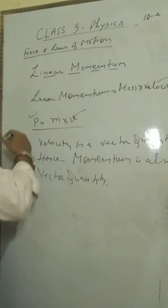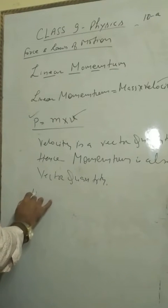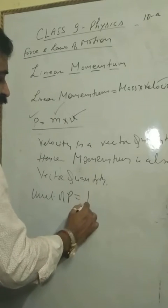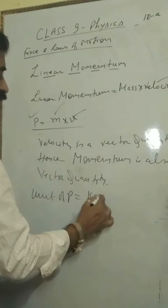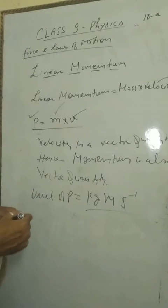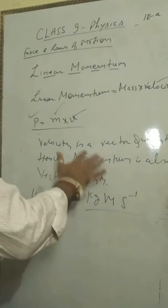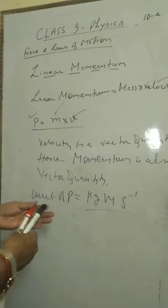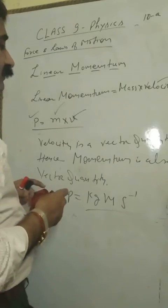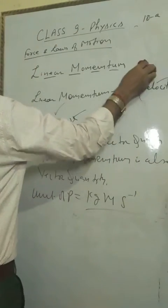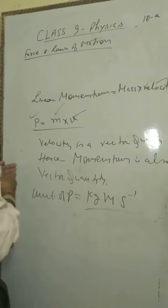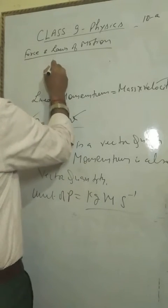And what is the unit? Unit of P is equal to mass into velocity. This is the unit of momentum.